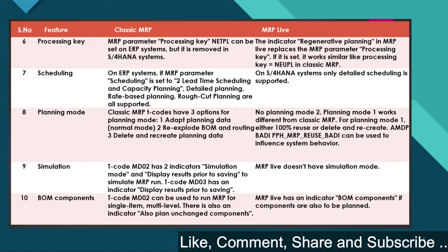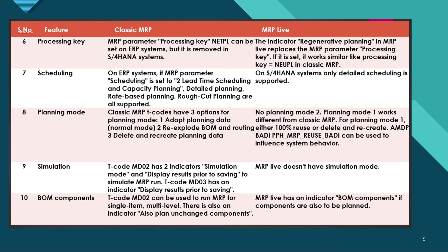Regarding planning mode: classic MRP has three options — adapt planning data, re-explode BOM, and delete/recreate planning data. Whereas in MRP Live there is no planning mode, and planning mode 1 works differently from classic MRP.